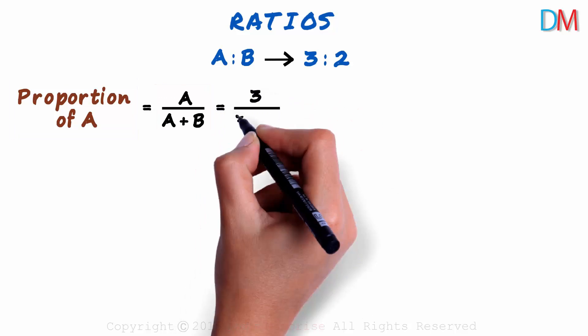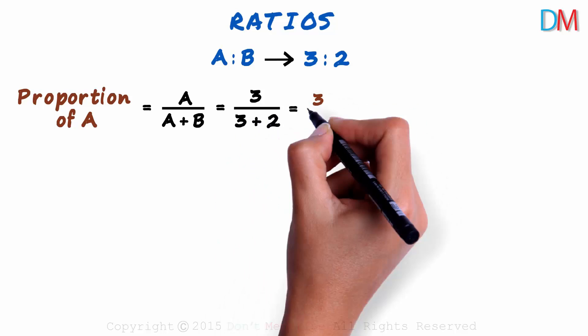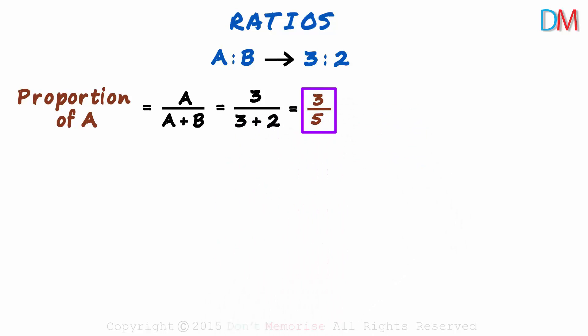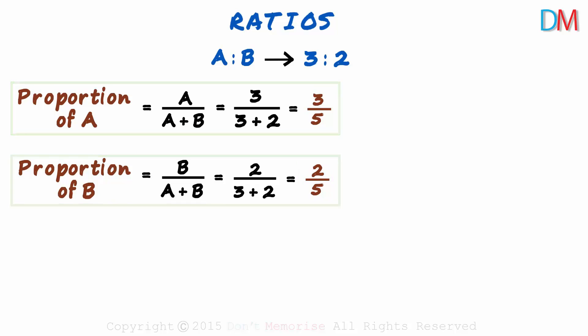It will be equal to 3 over 3 plus 2, or 3 over 5. This will be the proportion of A given this ratio. Similarly, the proportion of B will be 2 over 5. In both these cases, we are comparing one quantity with the overall quantity. There is another way in which this ratio can be interpreted.